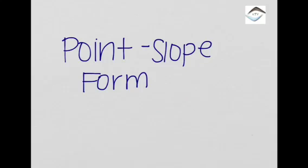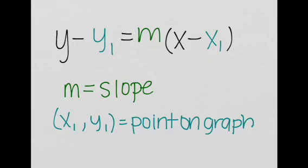Just like the slope-intercept form, there's this other form called the point-slope form, which is just another way to express the equation of a line. Let's see how it works.